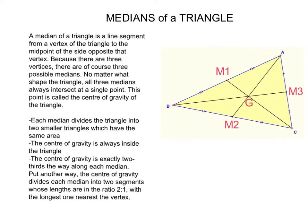The next one is the median. The median of a triangle is a line which connects the vertices to the midpoint of the opposite side. For example, side BC has the midpoint at M2.